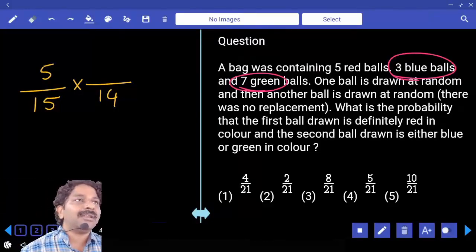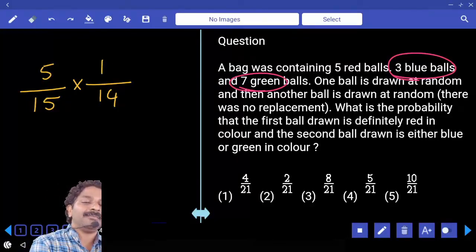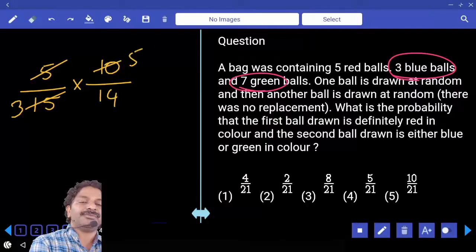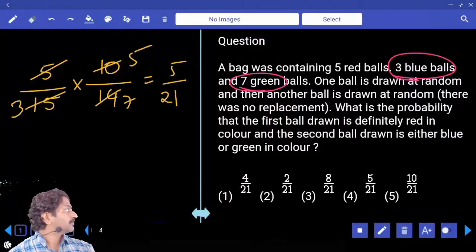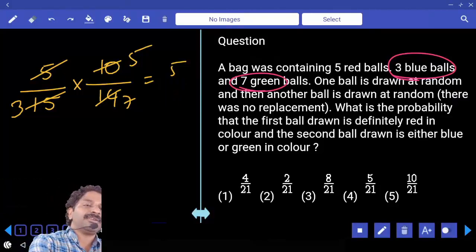Out of these 10 we may pick anyone. That can be done in 10C1. 3 times 2, 5 times 7 times. Answer: 5 by 21. In the same question, suppose...